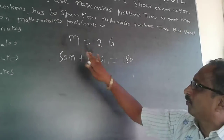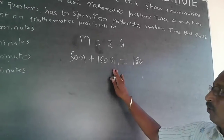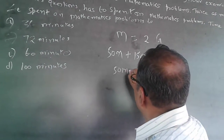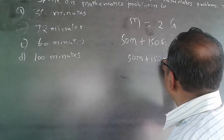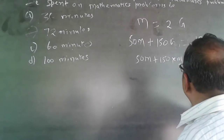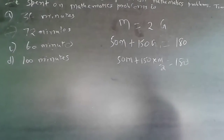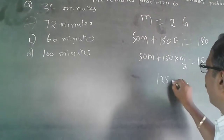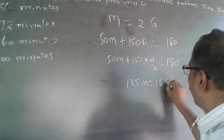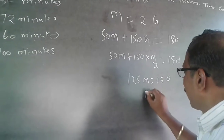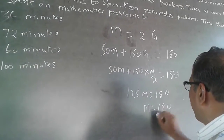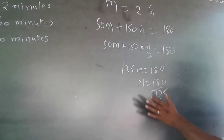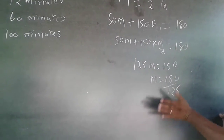Substituting, this becomes: 50m + 150 into (m/2) = 180, which gives 50m + 75m = 180, so 125m = 180. Therefore m = 180/125.